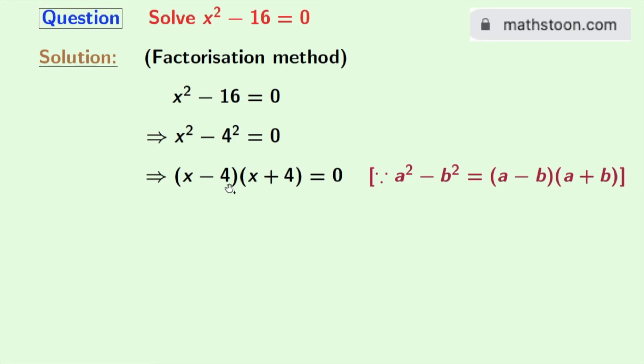We know that if the product of two numbers is 0, then each number individually is 0. So either x - 4 = 0 or x + 4 = 0. From this we get x = 4 and x = -4.